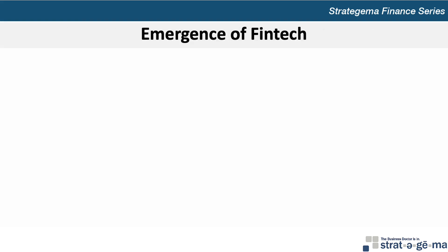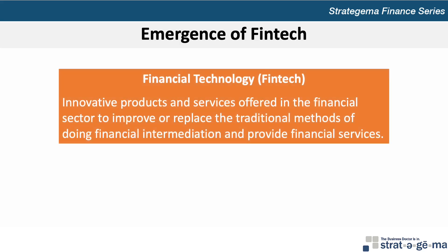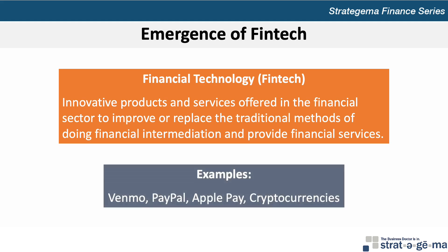The last key concept to consider in this chapter is the emergence of financial technology, or fintech. Fintech refers to innovative products and services offered in the financial sector to improve or replace the traditional methods of financial intermediation and provide financial services. Examples of fintech firms and products include Venmo, PayPal, Apple Pay, and even cryptocurrencies. Fintech innovations are used in the banking sector, investment management field, finance, regulatory compliance areas, and many others. The fast growth of fintech is attributed to the accessible, innovative, efficient, and low-cost alternative it provides compared to traditional products or services offered by financial institutions.